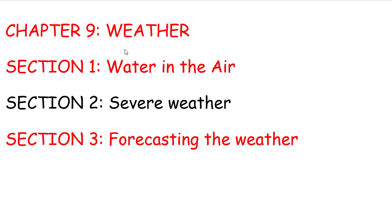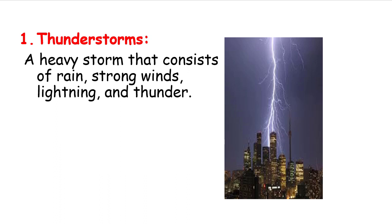Chapter 9: Weather. There are three sections: Section 1 - Water in the Air, Section 2 - Severe Weather, Section 3 - Forecasting the Weather. Let us start with Section 2: Severe Weather. Thunderstorms are a heavy storm that consists of rain, strong winds, lightning, and thunder.